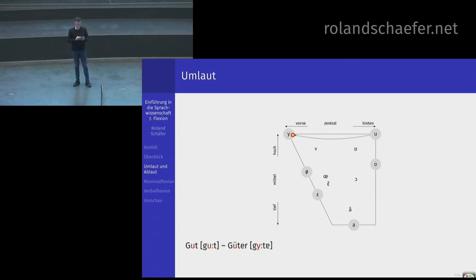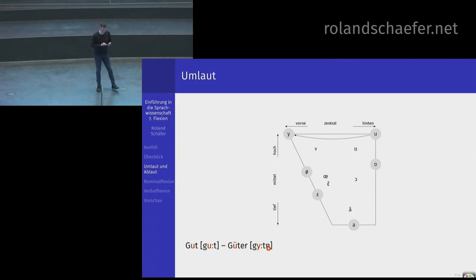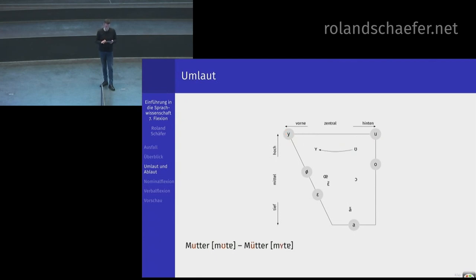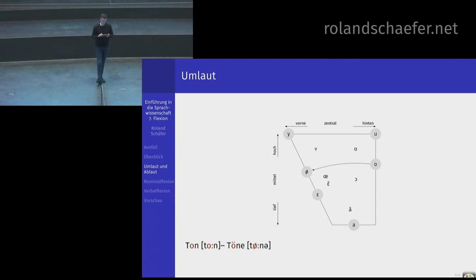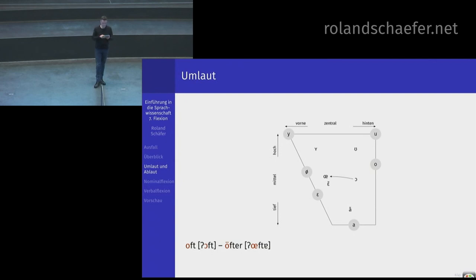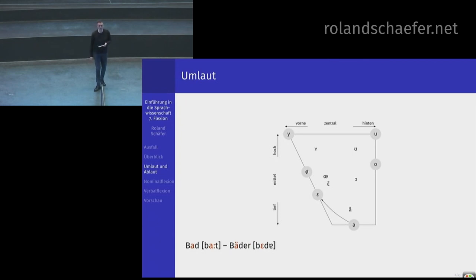Gut – Güter: wenn Sie das U umlauten, wie das beim Plural von Gut passiert, bewegen Sie Ihre Zunge nach vorne. Mutter – Mütter: das sind die ungespannten Varianten, Sie machen aber dasselbe. Ton – Töne passiert dasselbe, nur eine Etage tiefer. Oft – öfter: Sie bewegen auch bei oft zu öfter – dieser Komparativbildung – die Zunge ein Stückchen nach vorne. Krank – kränker ist genau dasselbe, und Bart – Bärte auch. Das ist Umlaut.